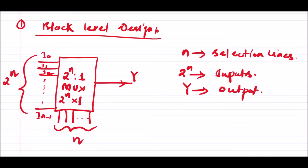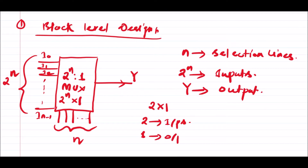Now let us say I want to design a 2x1 multiplexer. For a 2x1 mux, 2 can be written as 2 to the power 1, so we have 2 number of inputs, 1 number of output, and 1 number of selection line.